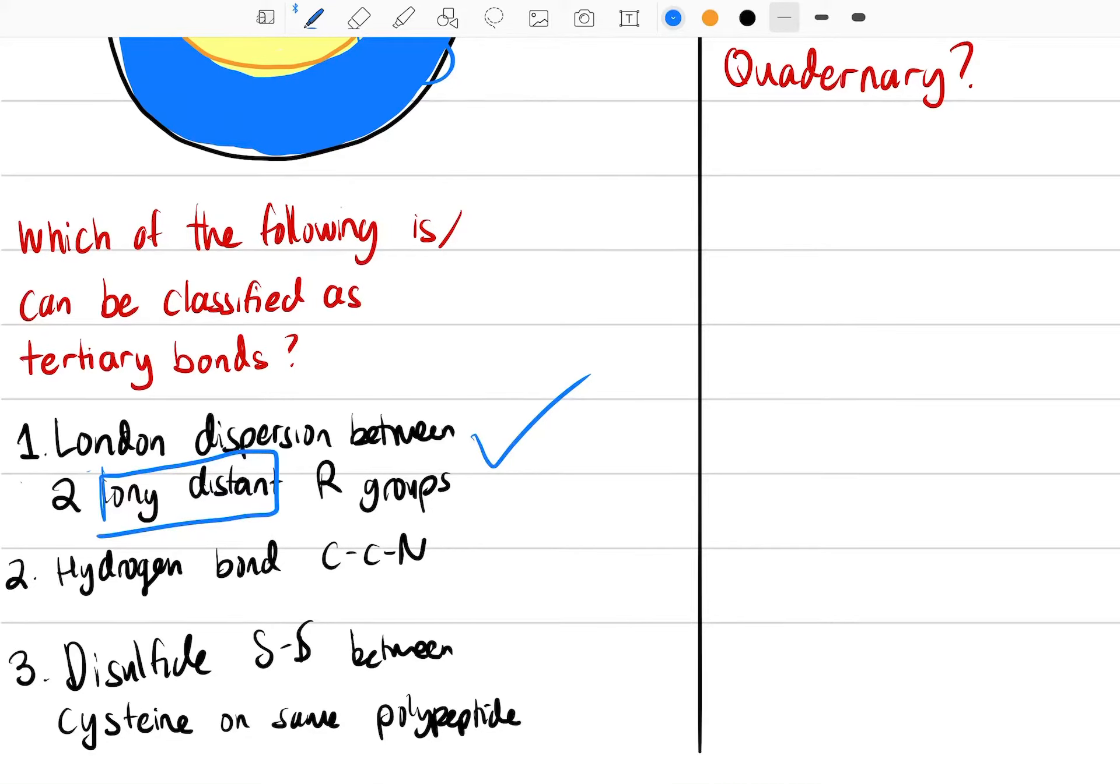A hydrogen bond with a C-C-N backbone structure, would that be a tertiary bond? That would not be a tertiary bond because hydrogen bonds are more of a reference to a secondary structure.